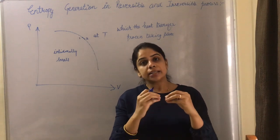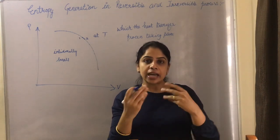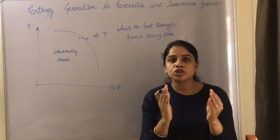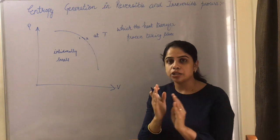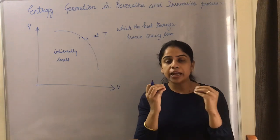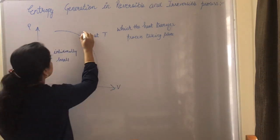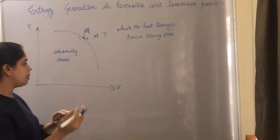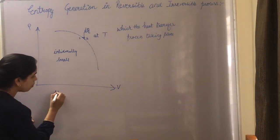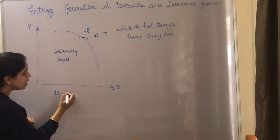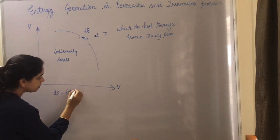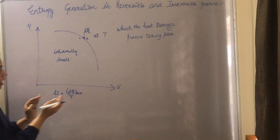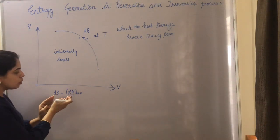The same amount of heat is rejected by the system, because there is essentially no difference between state one and state two — they are infinitesimally close. So DQ heat is added to the system and the same amount is rejected. Therefore, the change of entropy for the reversible process is DQ/T. So entropy change for any reversible process is DQ/T.